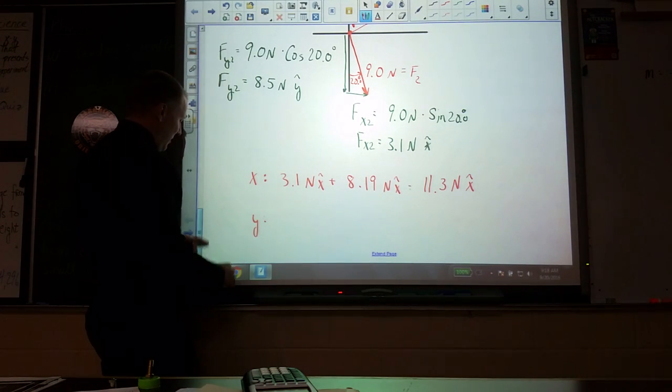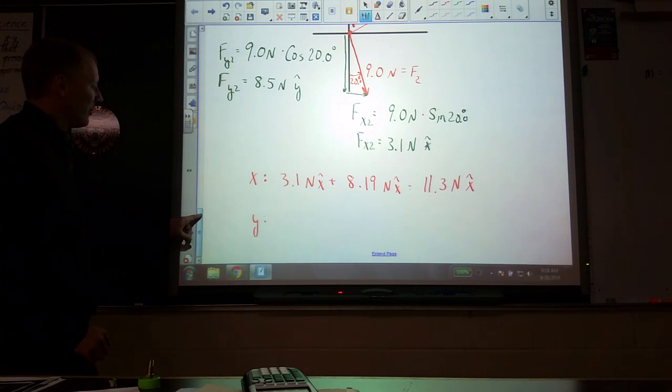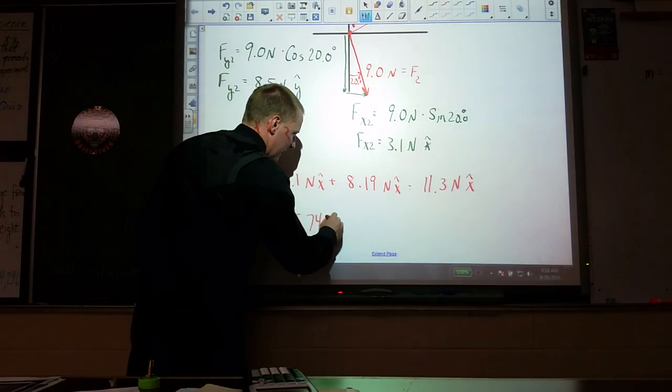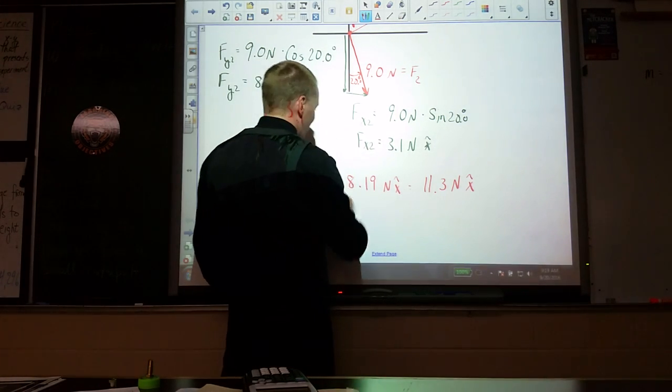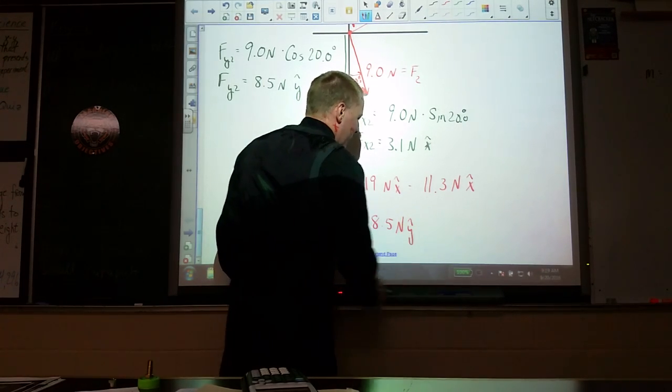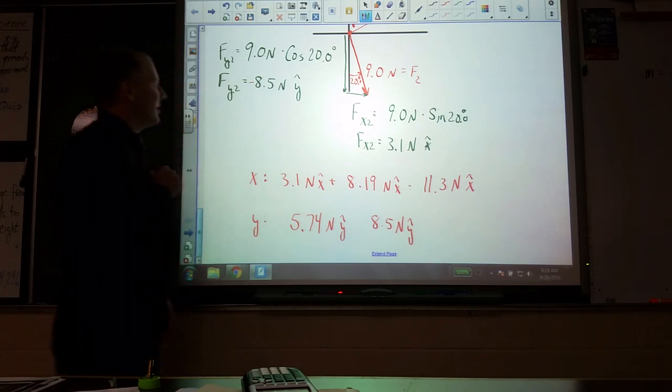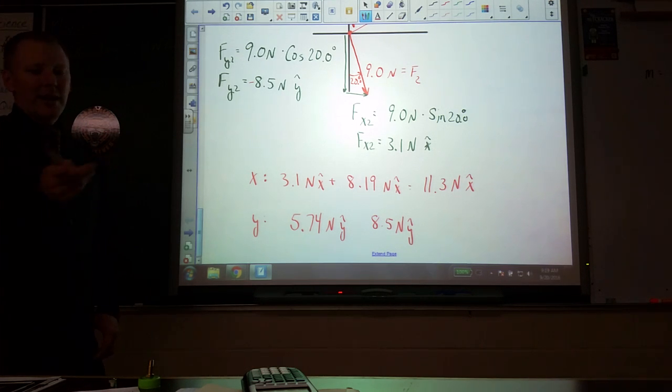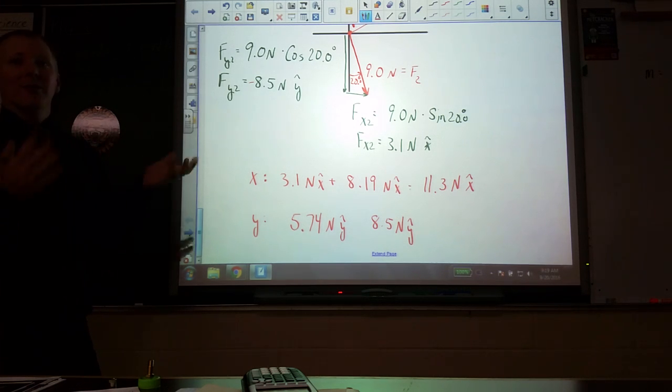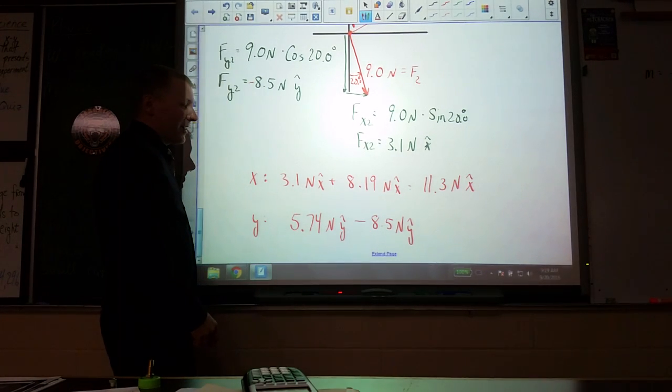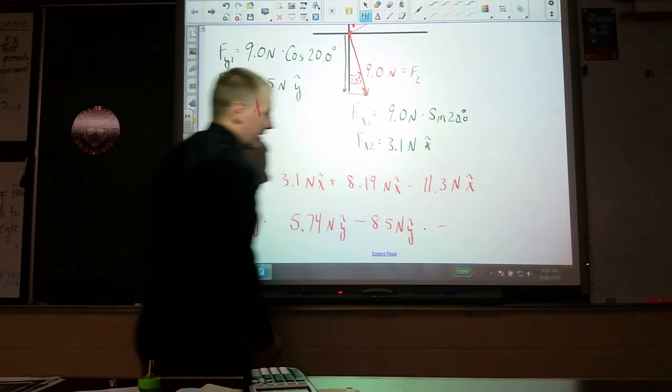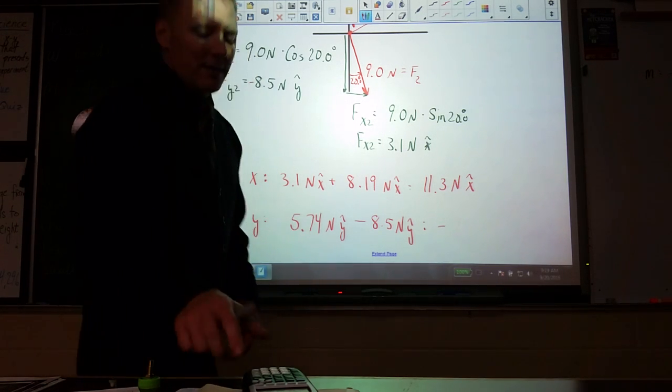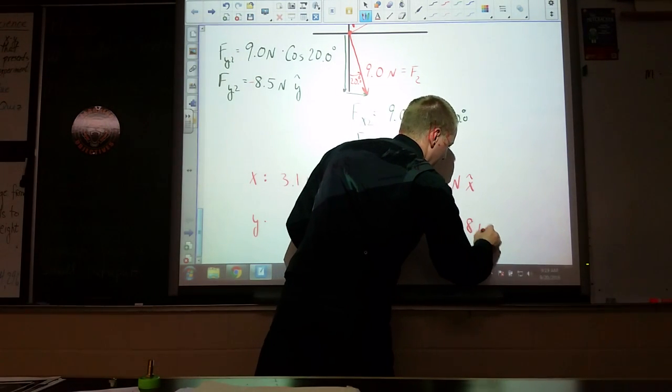What about in our y direction? We've got one pointing up and one pointing down. We have 5.74 in the y-hat direction, and we have 8.5, but that's in the negative direction. If they're going in opposite directions, they have to be opposite signs. This actually ends up being a subtraction. What do we get? 2.8 in the negative direction. Negative 2.8, and that's y-hat. The negative indicates it's in our negative direction.